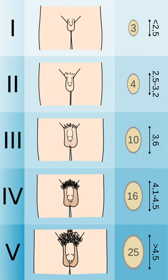Tanner 3, Hair becomes more coarse and curly and begins to extend laterally, 11.5 to 13.